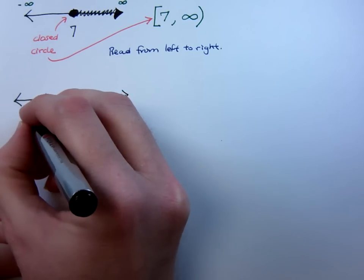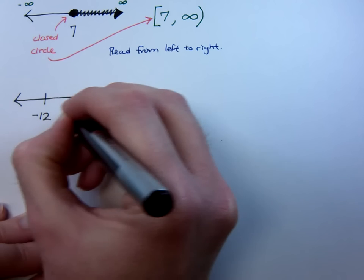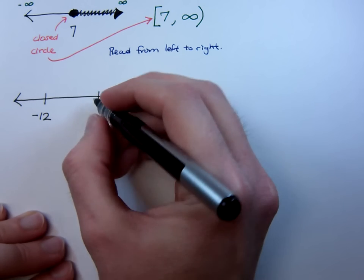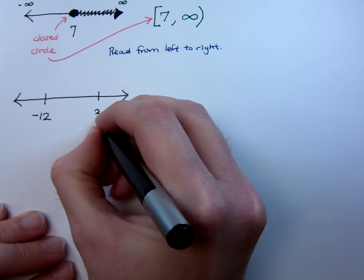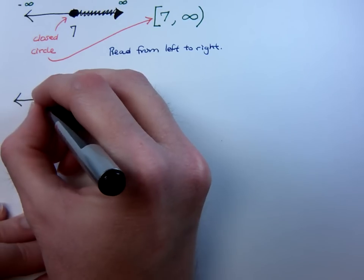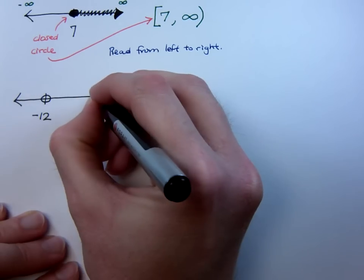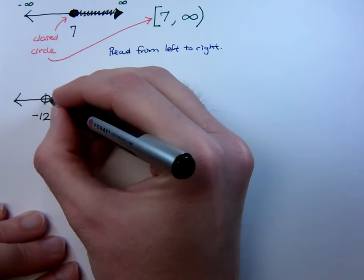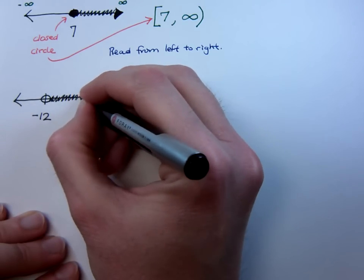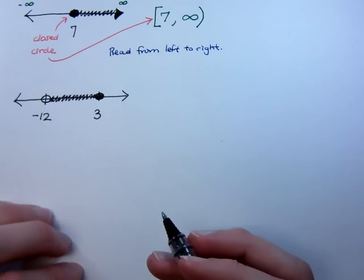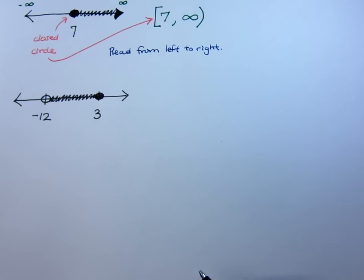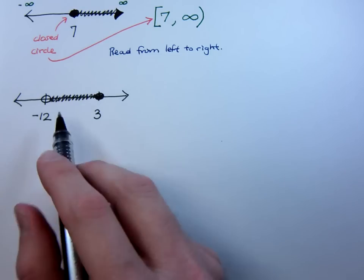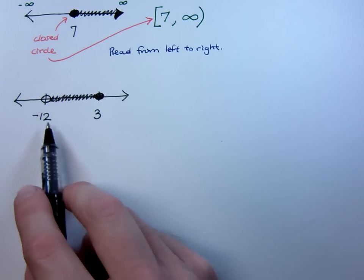Suppose I have on the left negative 12, and on the right I have 3. And let's suppose that this is an open circle, this is a closed circle, and then I want to include everything in here. I'm just saying, suppose this is my solution set.